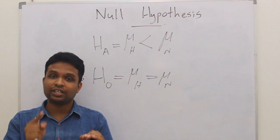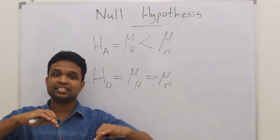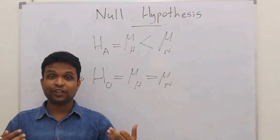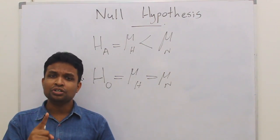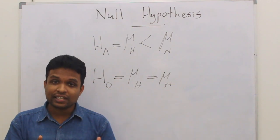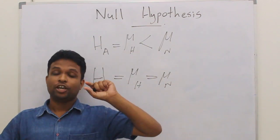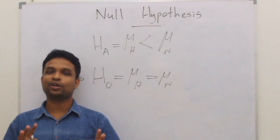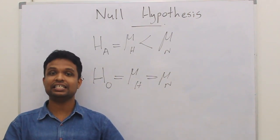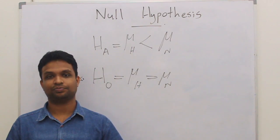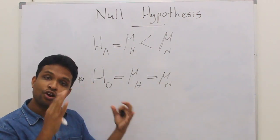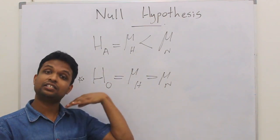If you need to test whether there is a significant difference or whether there is a significant association, you need to know what is significant. If you know what is not significant, then only you can decide whether this is significant or not. So null hypothesis indicates what is not significant or what is normal.